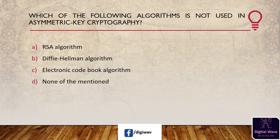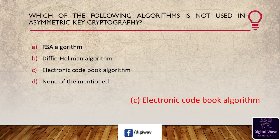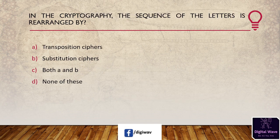Next question: which of the following algorithms is not used in asymmetric key cryptography? Options are: RSA algorithm, Diffie-Hellman algorithm, Electronic Code Book algorithm, and none of the mentioned. The answer is Electronic Code Book algorithm — ECB is a mode of operation for a block cipher where each block of plain text is encrypted independently, so the same plain text value gives the same cipher text value.